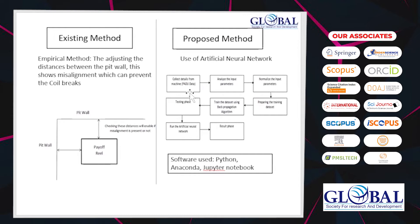This is the flowchart for the neural network. First, we collect data from the machine. This project is done at Tata Steel CRC. The machine generates process data each month for all parameters, such as length and elongation. We take all the input parameters, normalize them, and then plot a training dataset. 80% of the data is used for training and 20% for testing. The software used is Python, which is interactive and user-friendly.